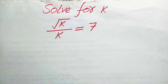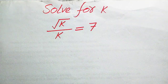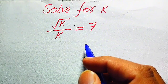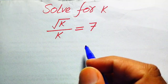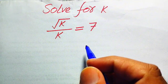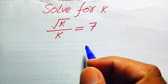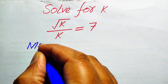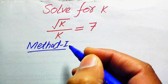Hello everyone. How to solve this problem: for the values of k, if we have k root of k divided by k equals 7? We solve this problem for all the values of k. First we need to find all the roots of this equation, and at the end we will verify which of the roots are solutions and which are extraneous roots. We solve this problem using two methods.